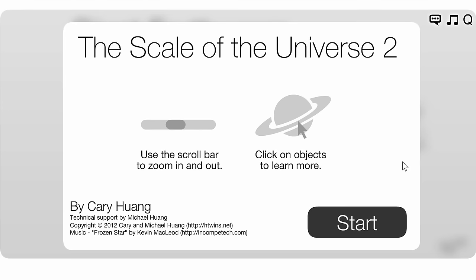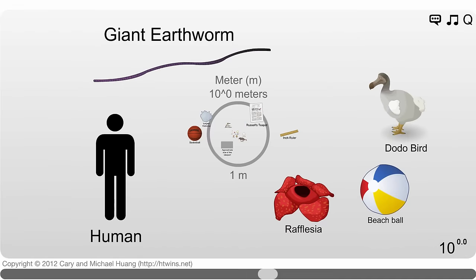So let's start this and as you start this app, you'll actually find yourself right here. Here's us. Here's some flowers, dodo bird that basically got killed by us a long time ago, and a giant earthworm. Now we're going to start by zooming in first and as you can see, this is our scale. We're going to zoom in and discover some of the smallest things in the universe.